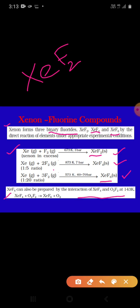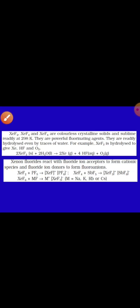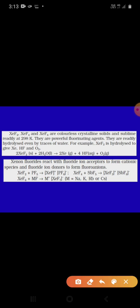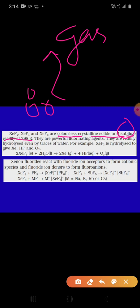XeF2, XeF4 and XeF6, these are, you know, what are the colour of this compound? These are colourless, crystalline solid and sublime readily at 298 Kelvin. You know what is sublimation? Solid directly converts into gas. So these compound XeF2, XeF4 and XeF6 are the solid crystalline compound which sublimes. They are powerful fluorinating agent, fluorinating agent means which make others, other compound, other element as fluoride. They can convert them as fluoride.